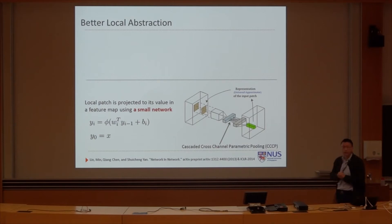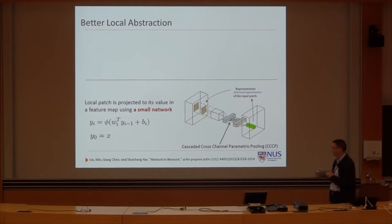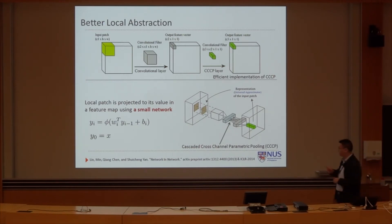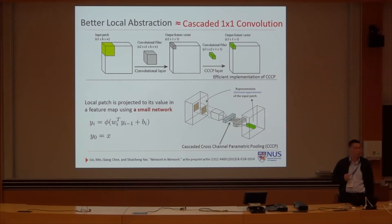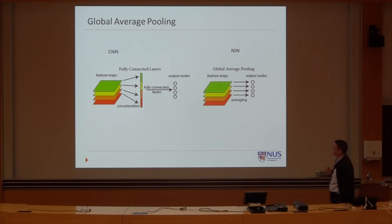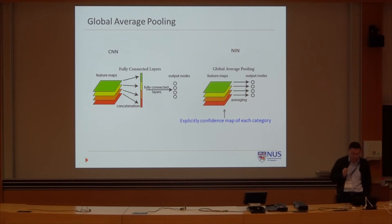The first advantage of Network in Network is that the local filter will have stronger, better local abstraction capability because of the small network. Each layer of this small network is actually an operation in the channel domain instead of the spatial domain. That's why we call it Cascaded Cross-Channel Parametric Pooling. For efficiency, the lower layers of these small networks are shared for different filters. Essentially, this CCCP is roughly equal to one-by-one convolution. The fully connected layer is replaced by global average pooling, giving clear semantic meaning to the last convolution layer — the confidence map for each category.